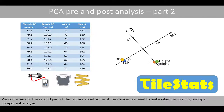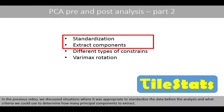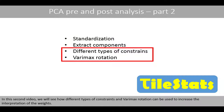Welcome back to the second part of this lecture about some of the choices we need to make when performing principal component analysis. In the previous video, we discussed situations where it was appropriate to standardize the data before the analysis, and what criteria we could use to determine how many principal components to extract. In this second video, we'll see how different types of constraints and varimax rotation can be used to increase the interpretation of the weights.